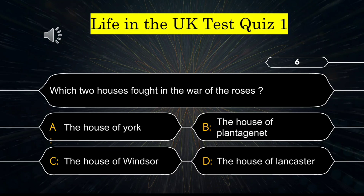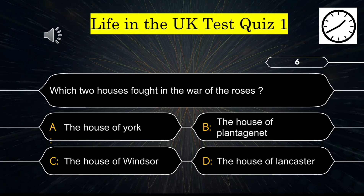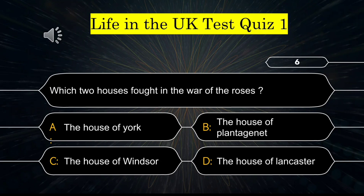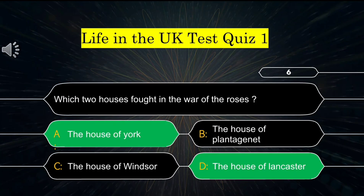Question number 6: Whose two houses fought in the War of the Roses? Your options are: A) the House of York, B) the House of Plantagenet, C) the House of Windsor, or D) the House of Lancaster. The correct answer is the House of York and the House of Lancaster.